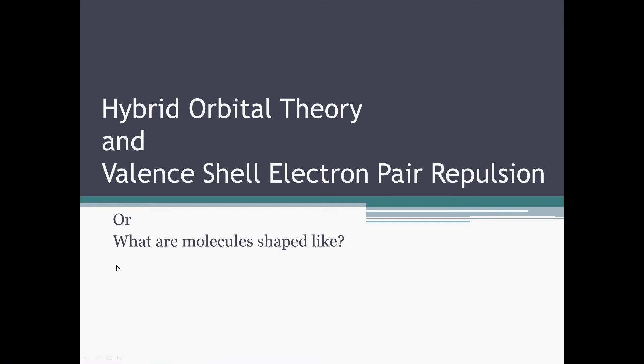At this point in our story of the electron, we've talked about how electrons are arranged within an individual atom and the consequences of this for bonding.